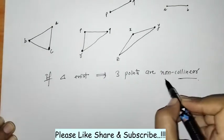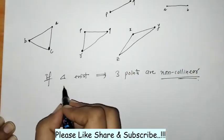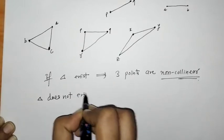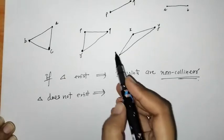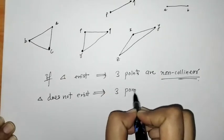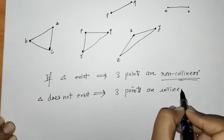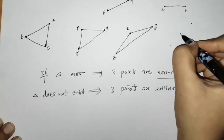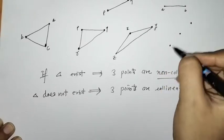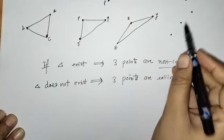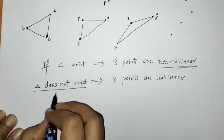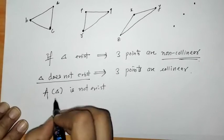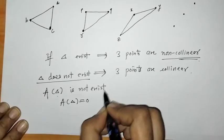So we can write: if a triangle exists, then the three points are non-collinear. Taking the inverse of this statement: if a triangle does not exist through these three points, that means these three points are collinear. If triangle does not exist, that means the area of the triangle does not exist.